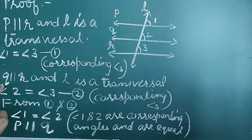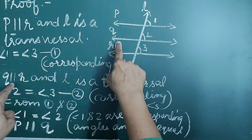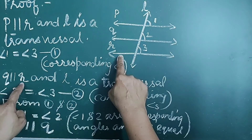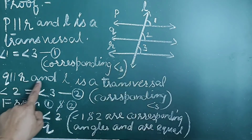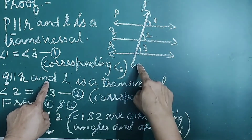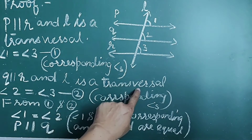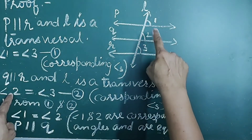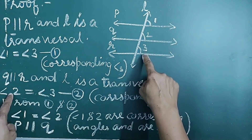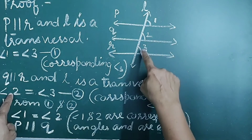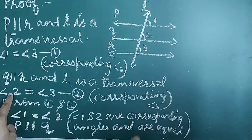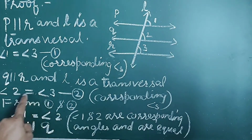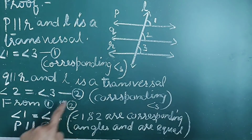Again, line Q is parallel to line R and L is a transversal. Therefore, angle 2 equals angle 3, as both are corresponding angles and are equal. This is equation number 2.